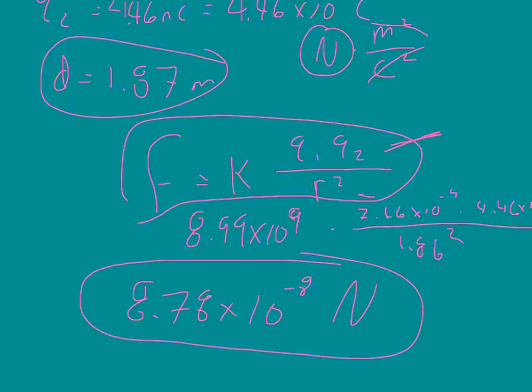And it wants to know if it's repulsive or if it's attractive. Now, both of these charges are positive, so we know that two positives are repulsive, and so that's kind of the logic there.